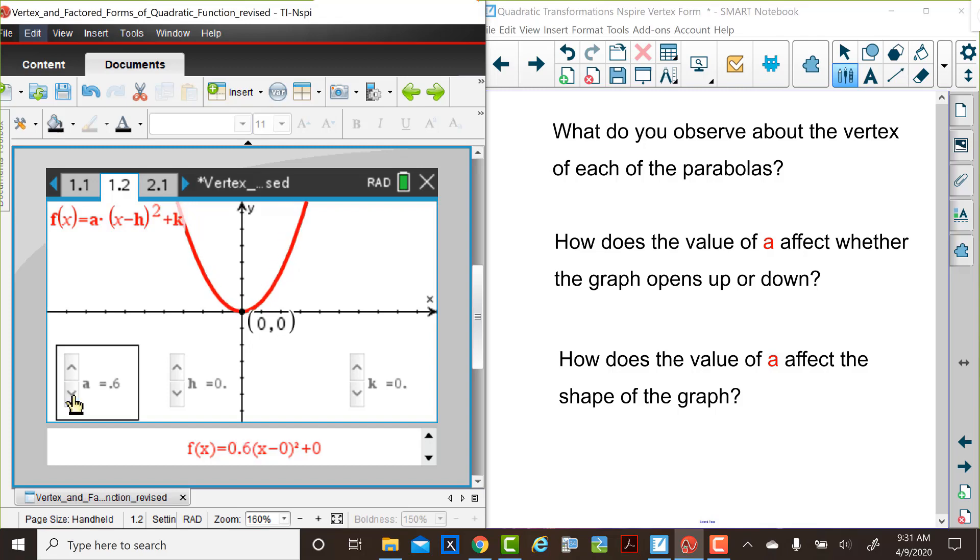When a is changed, does the graph open up or down? And how does the a value affect that? We know that we cannot use an a value of 0 because that would give us the graph f(x) equals 0 or the graph of a horizontal line. So consider how the vertex changes or does not change. How does the value of a affect the graph opening up or down? And how does the value of a affect the shape of the graph?